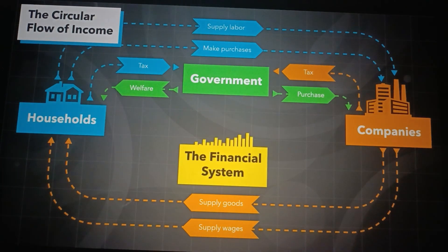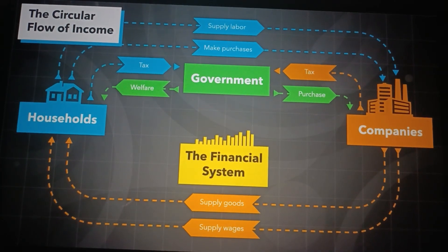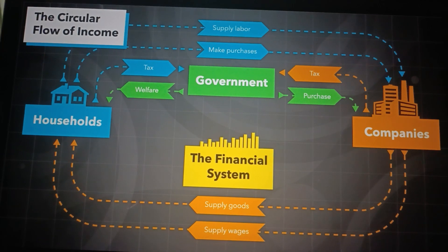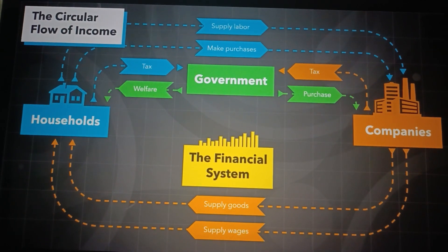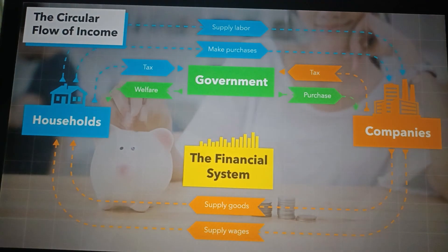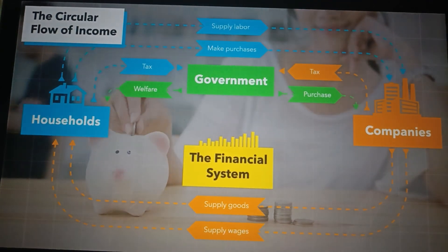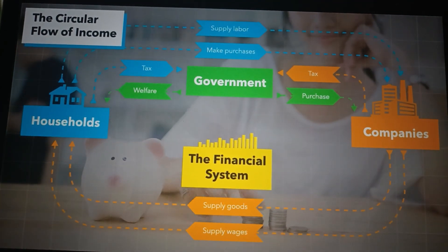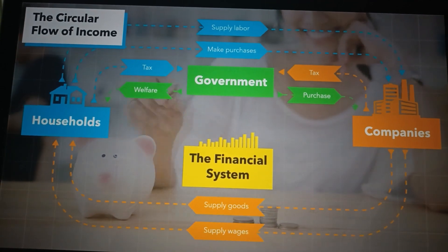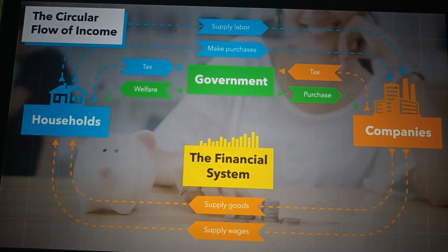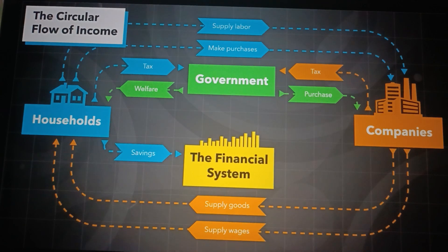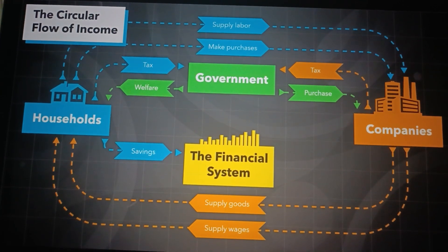The final piece of the puzzle is the financial system — the part of the economy that this course is focused on. If households are able to earn more than they spend, they end up with a bit of money left over at the end of the month. These are called savings. They can either keep those savings at home, save them in a bank, or lend them to someone who needs funding — not as a gift, but as an investment.